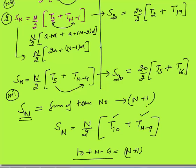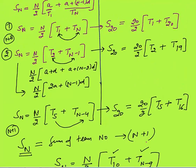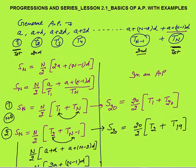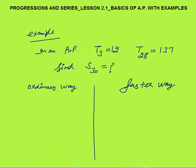So the concept is: you only need to add the first term from the beginning and the first term from the end, multiplied by n by 2, to get the sum. Or you can add the third term from the beginning and the third term from the end, multiplied by n by 2, to get your sum. Here is an example that will make this concept clear.